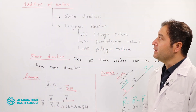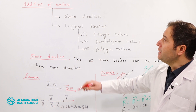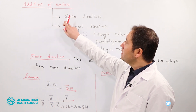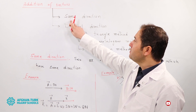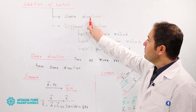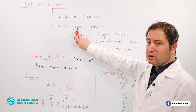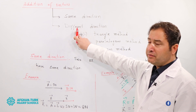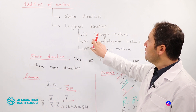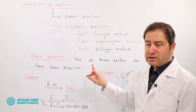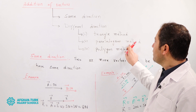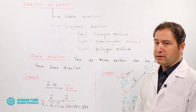Today we discuss the addition of vectors. In the addition of vectors there are different methods. The first method is same direction, the second one is different direction, and in different direction we have more different methodologies like triangle method, parallelogram method, and polygon method.